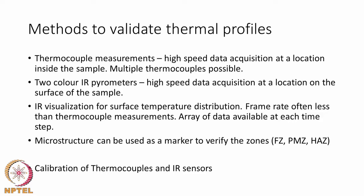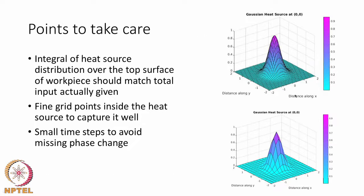Thermography provides an array of data at each time step, allowing reconstruction of the thermal history of any location and comparison with thermocouple data. We can also use microstructure as a marker to validate whether the fusion zone, partially melted zone, and heat affected zone match the calculated thermal profiles. The choice of heat source is accurate only when these zones are reproduced accurately. Importantly, thermocouples and IR sensors also need calibration themselves against standard samples — without calibration, temperatures reported by these experimental facilities could also be erroneous.